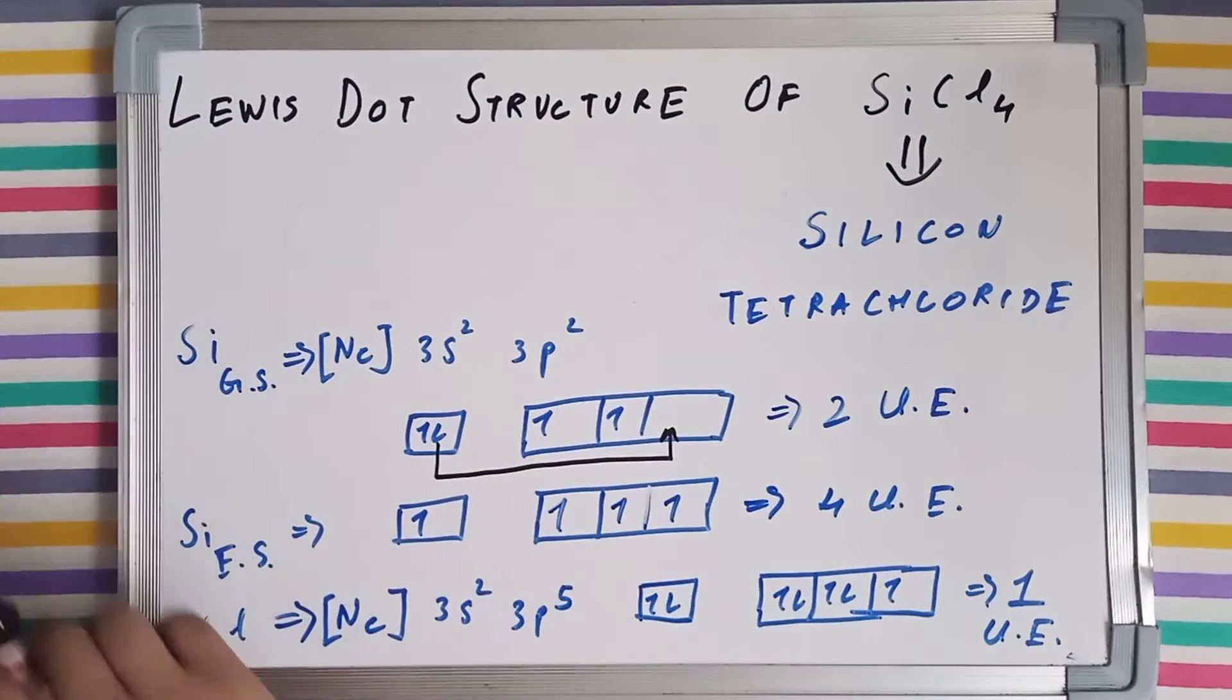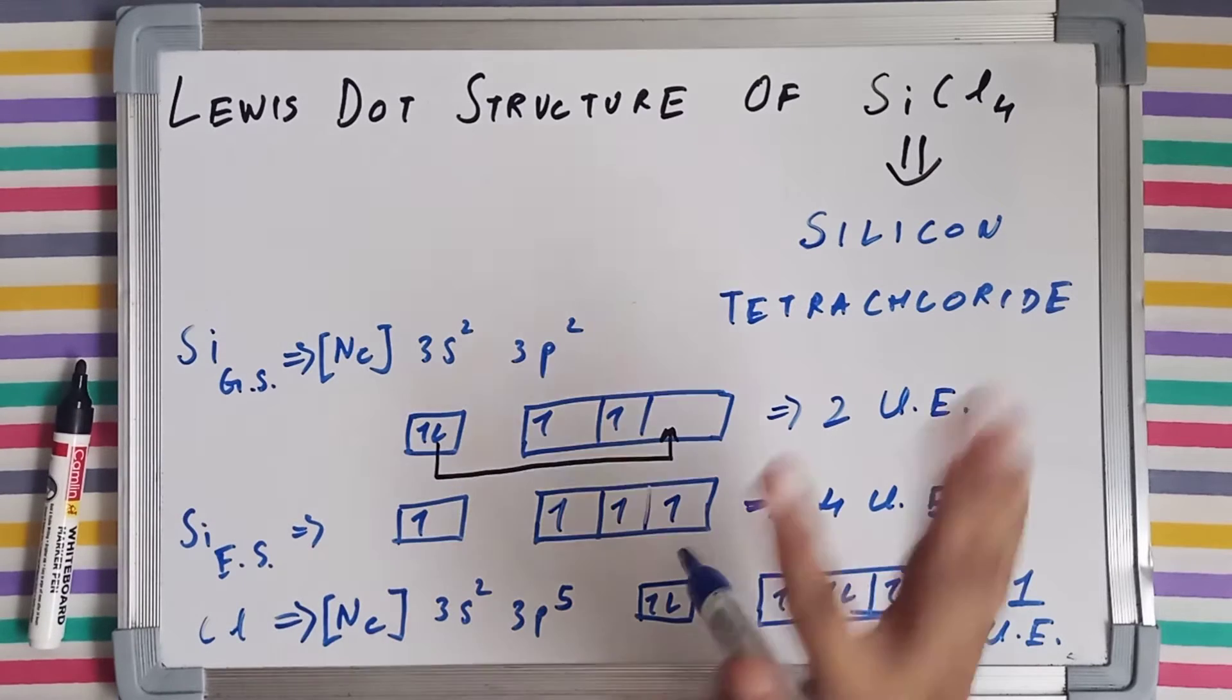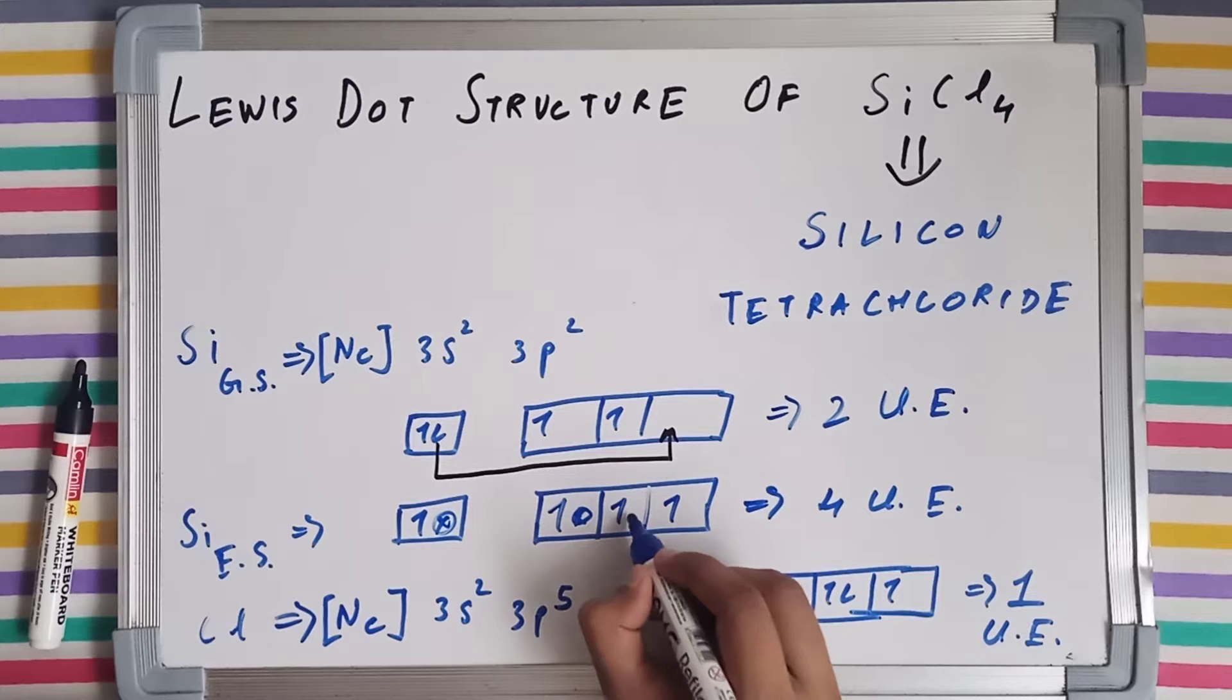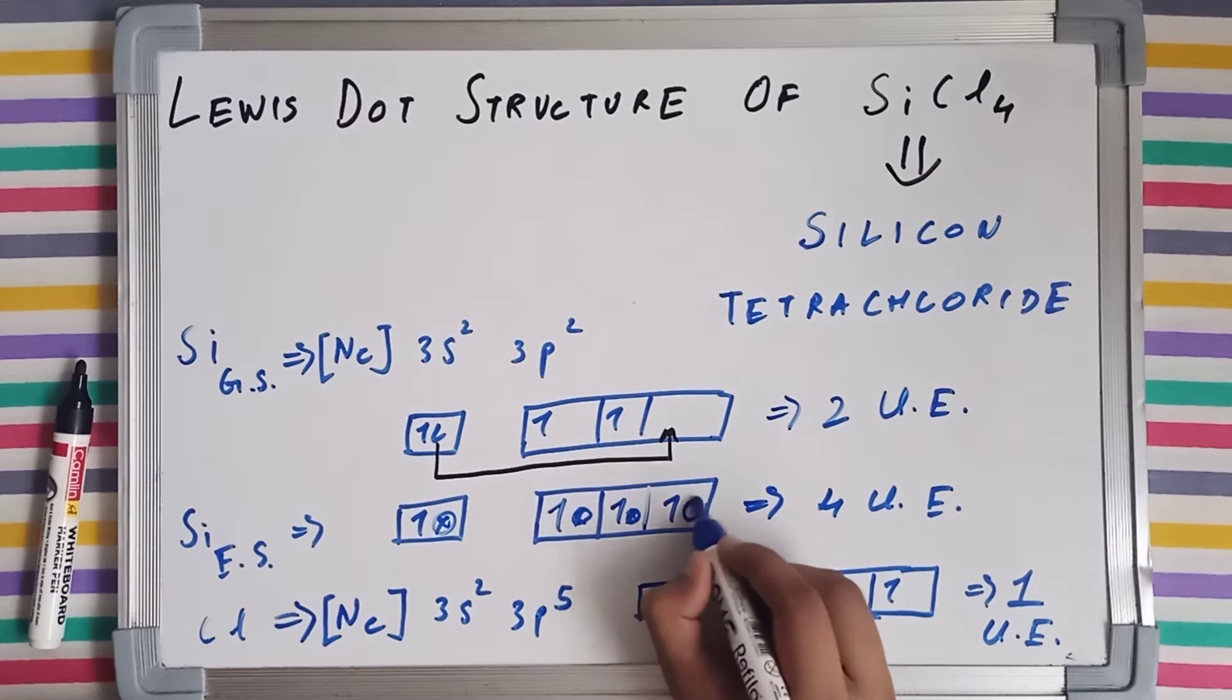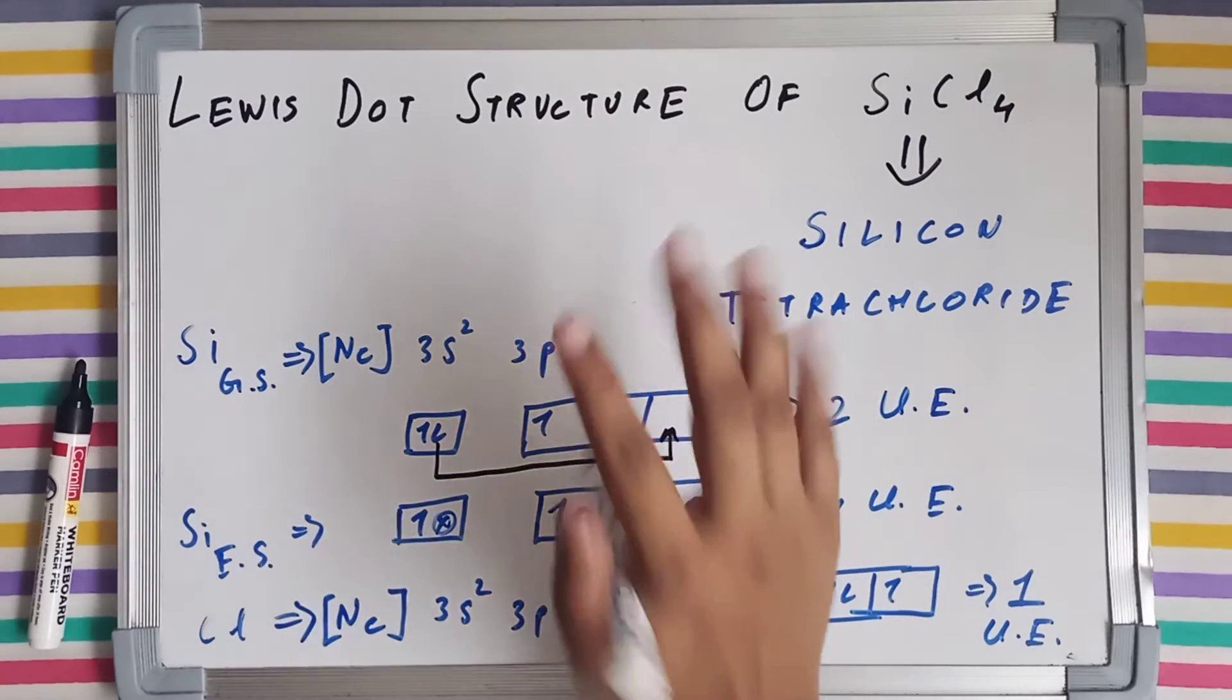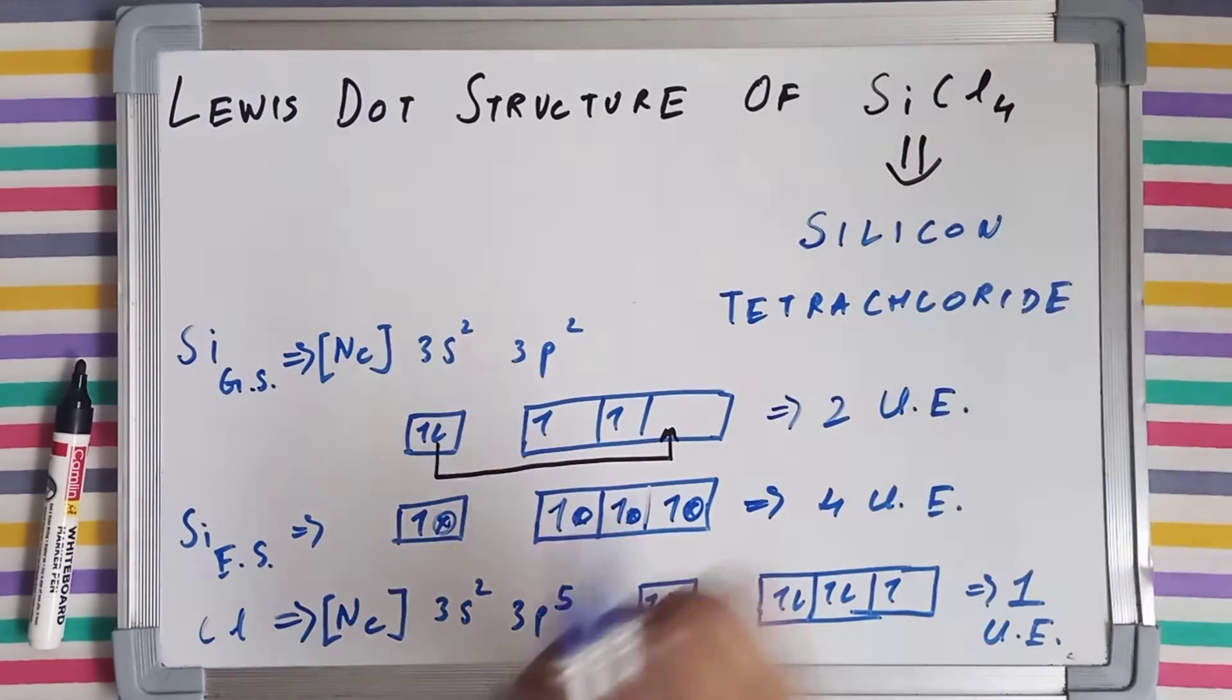Which means that now silicon can make four bonds. Here is a vacant space left, here is also vacant space left, similarly here and here also. So silicon can now make four bonds.